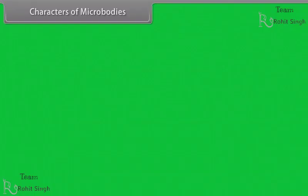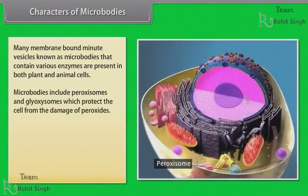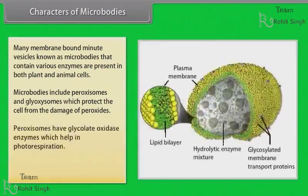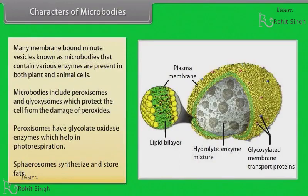Characters of microbodies. Many membrane-bound minute vesicles known as microbodies that contain various enzymes are present in both plant and animal cells. Microbodies include peroxisomes and glyoxysomes, which protect the cell from the damage of peroxides. Peroxisomes have glycolate oxidase enzyme which helps in photorespiration. Spherosomes synthesize and store fat.